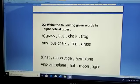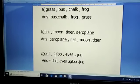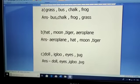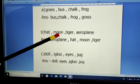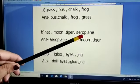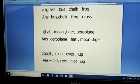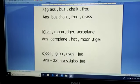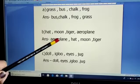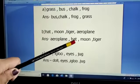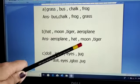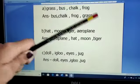Now let's come to the B part. Hat, moon, tiger and aeroplane. So A comes first, A for apple in alphabetical order. So aeroplane will be the first followed by H for hat, M for moon and at the end tiger.